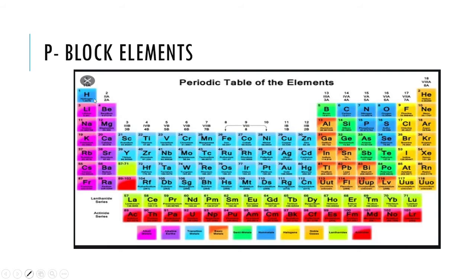This is the periodic table. In it, S block elements are here, and these belong to transition elements or D block elements. These two are lanthanides and actinides, which belong to F block elements. Groups 13 to 18 — that is, groups 13, 14, 15, 16, 17, and 18 — these six groups belong to P block elements.